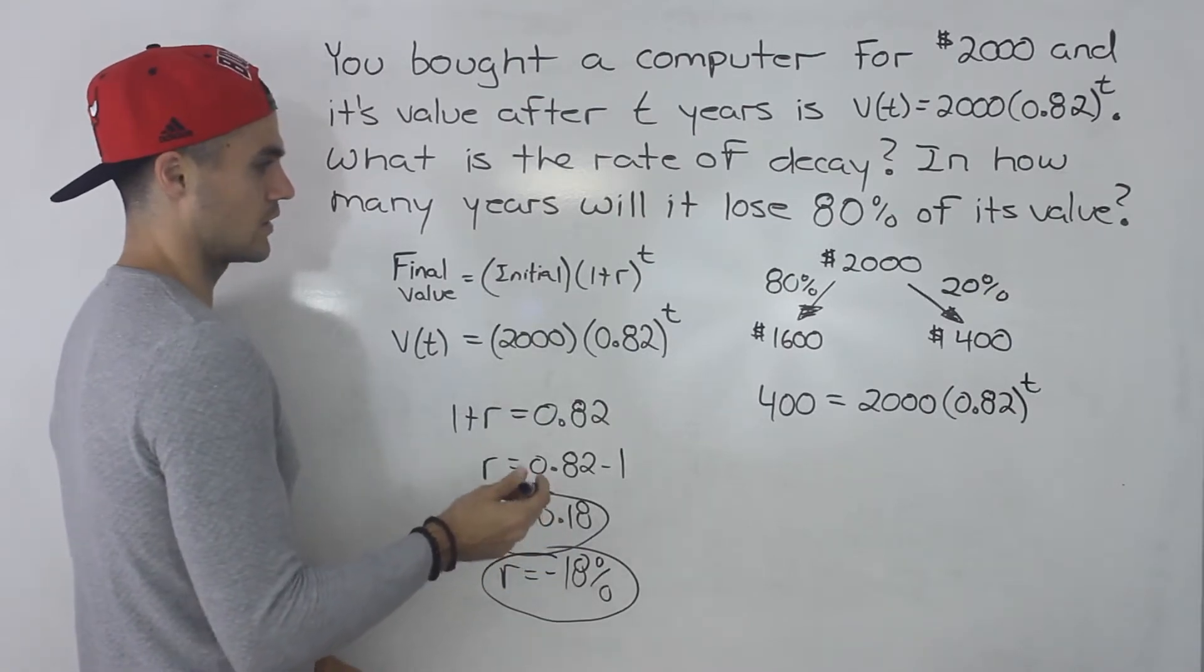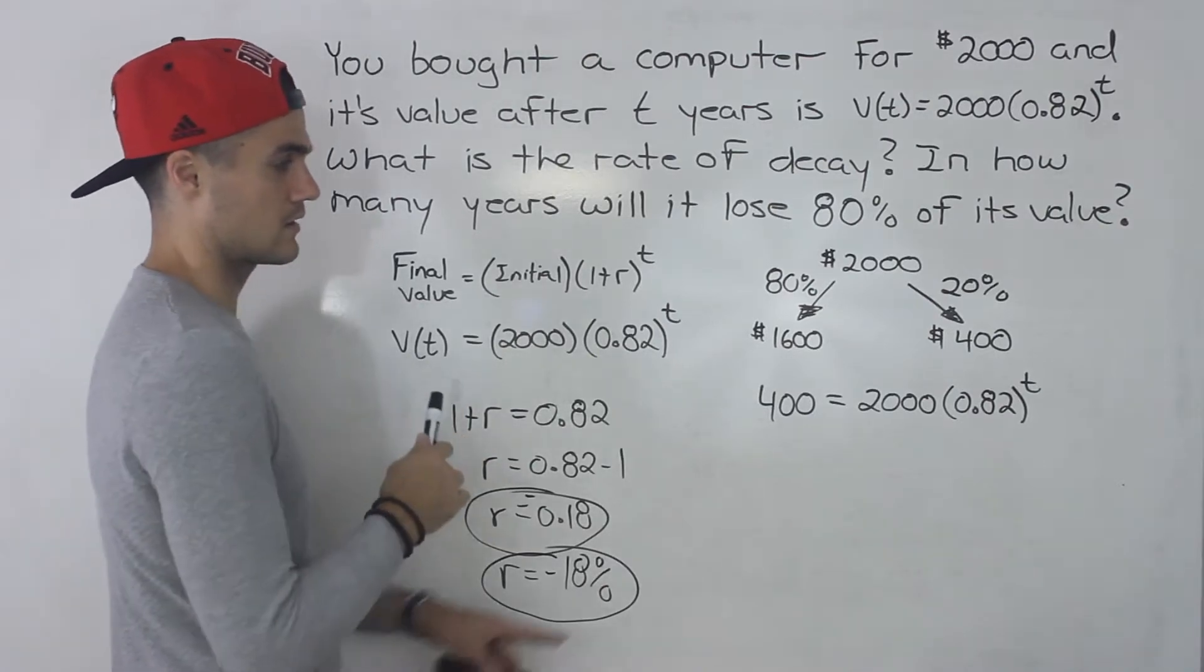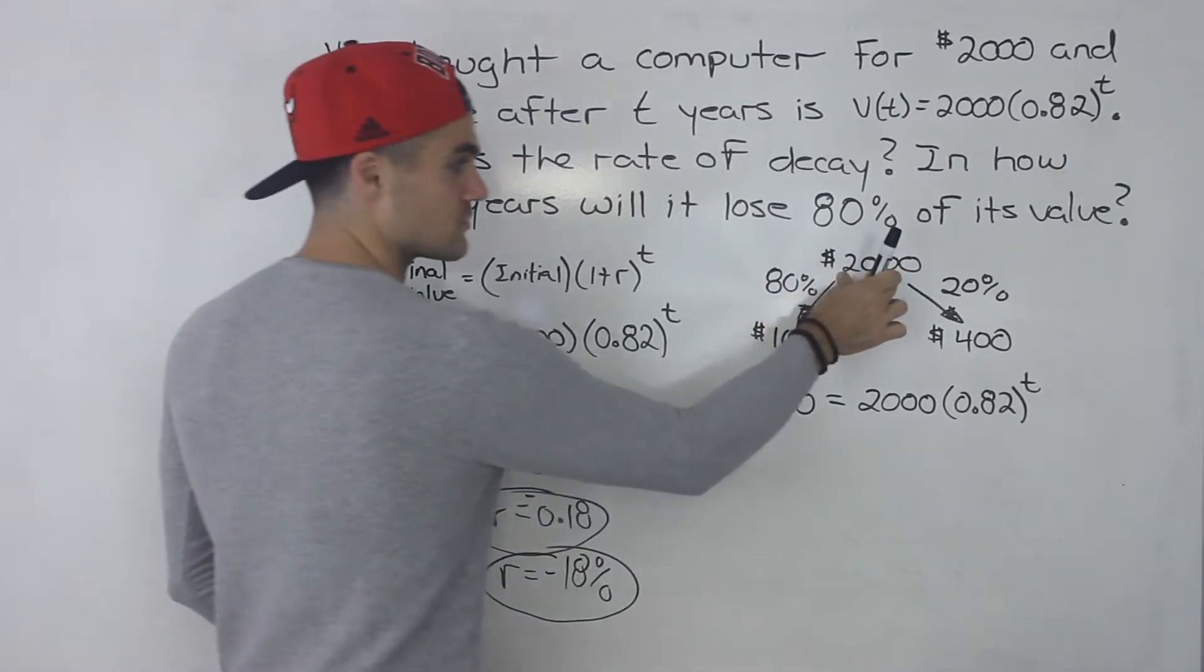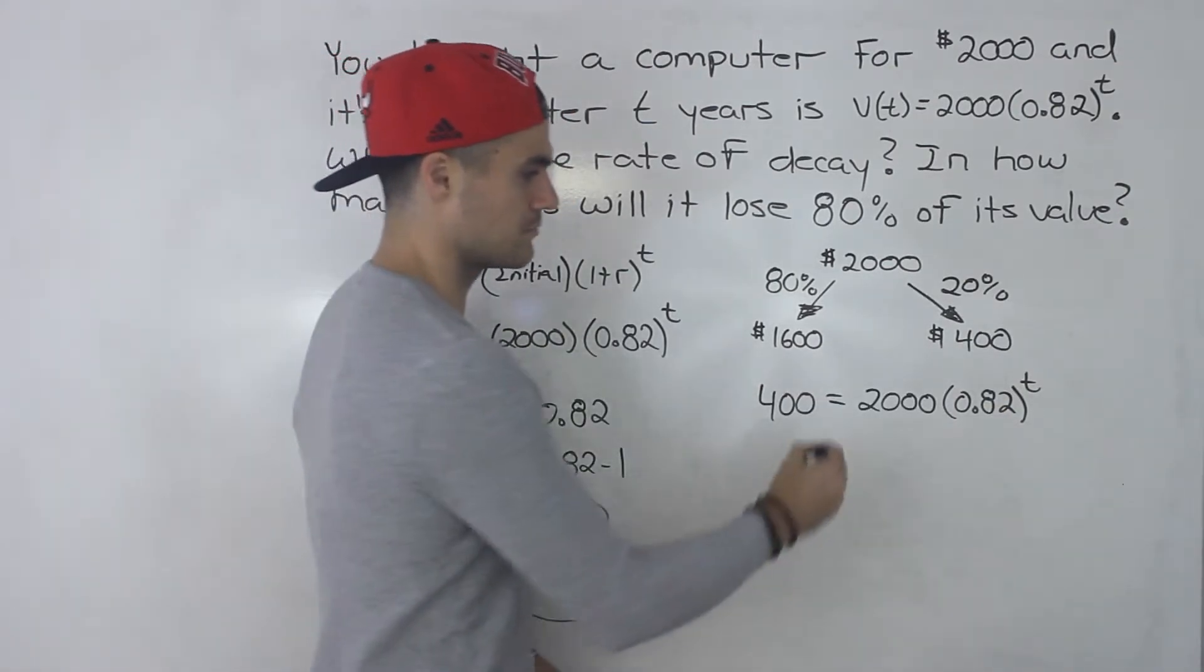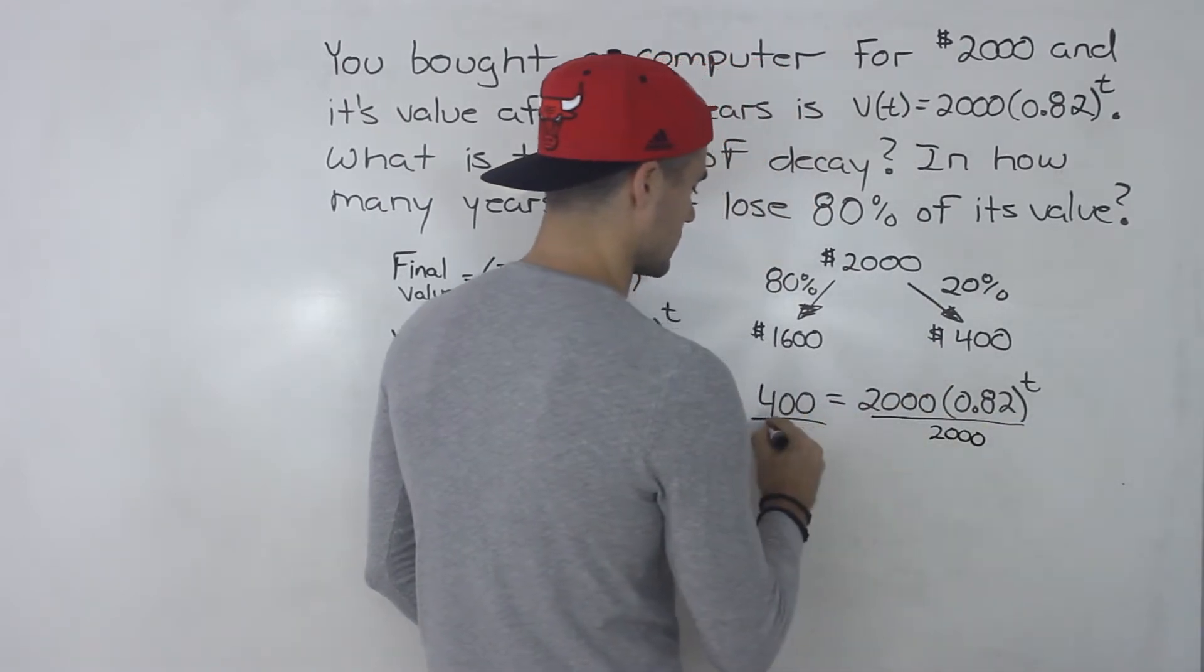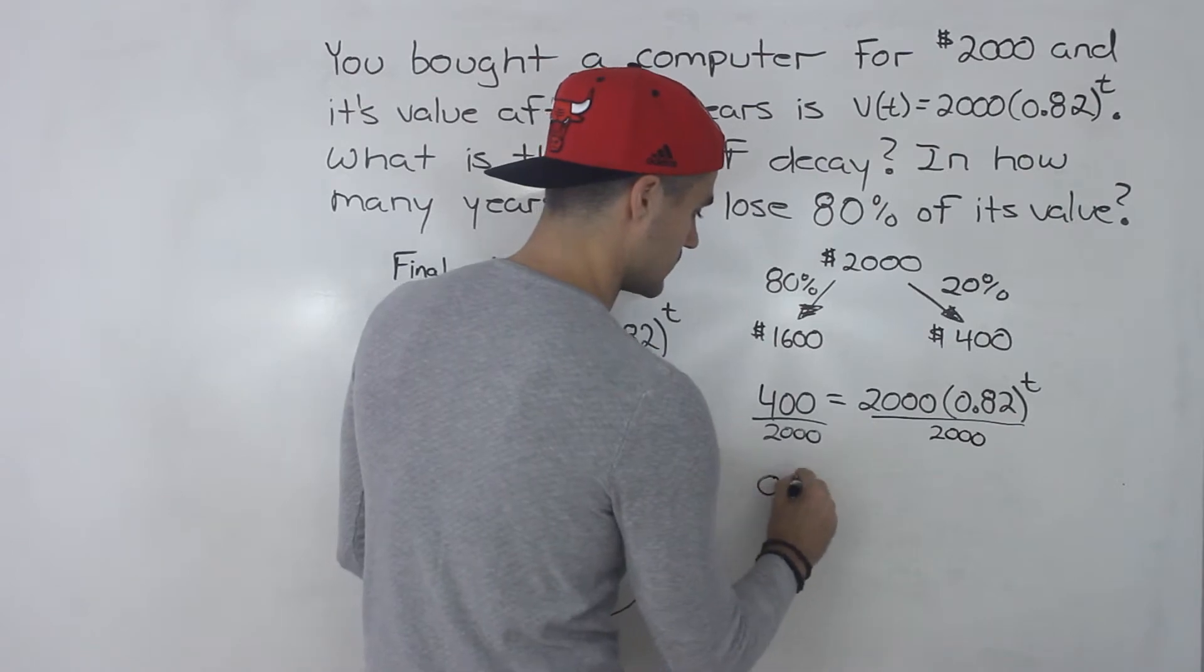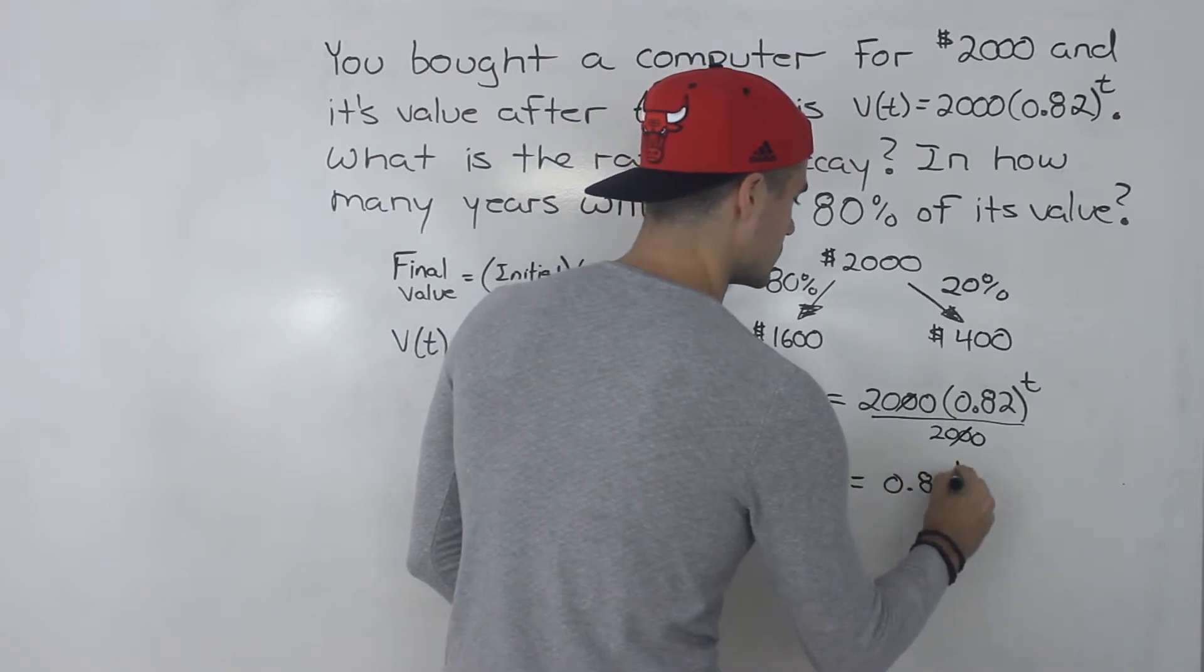So in this case we're going to be solving for the t value because we know what the value that we're dealing with is, it's $400. We're trying to figure out how many years it's going to take to go from $2,000 to $400. So to isolate for that t basically we divide both sides by 2,000. We want to get rid of that 2,000 in front. So divide the left side by 2,000 as well. 400 divided by 2,000 gives us 0.2. This cancels out so we're just going to be left with 0.82 to the t.